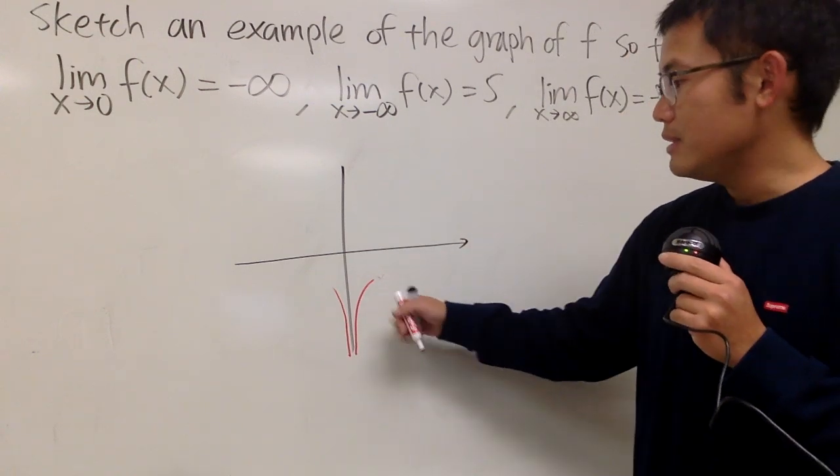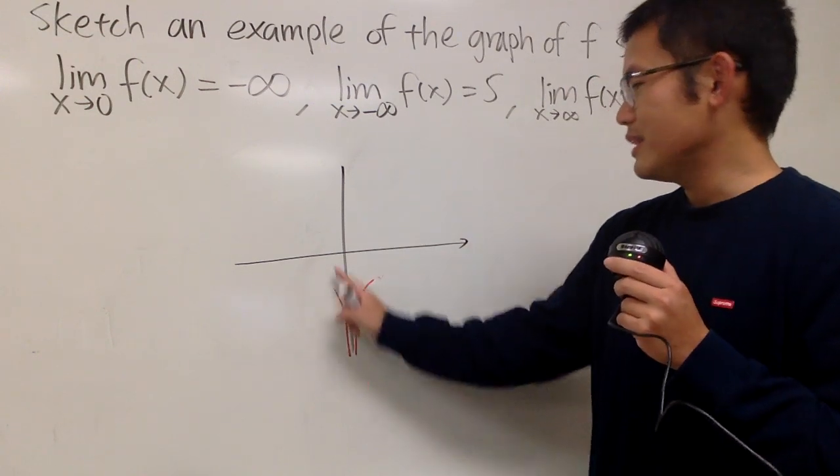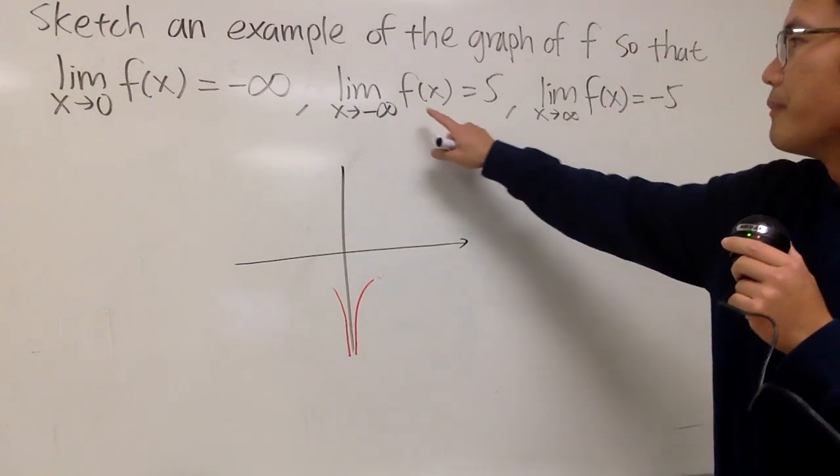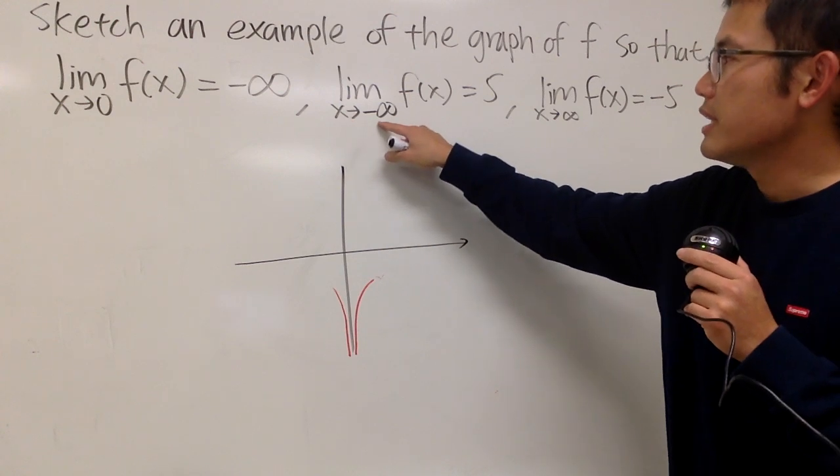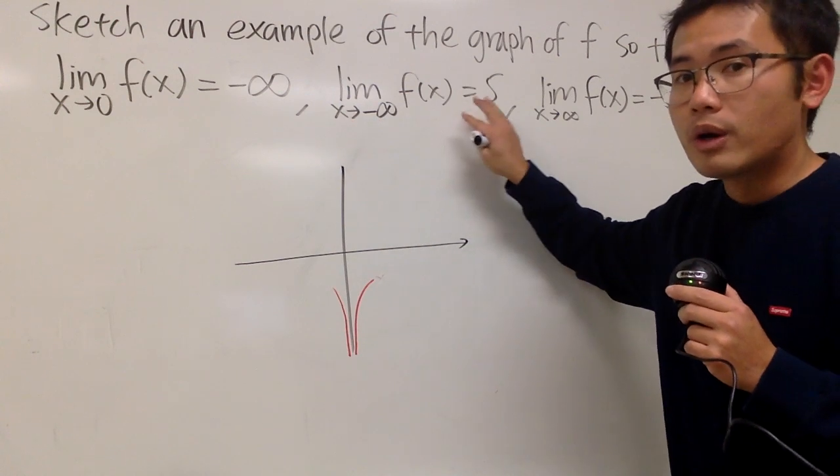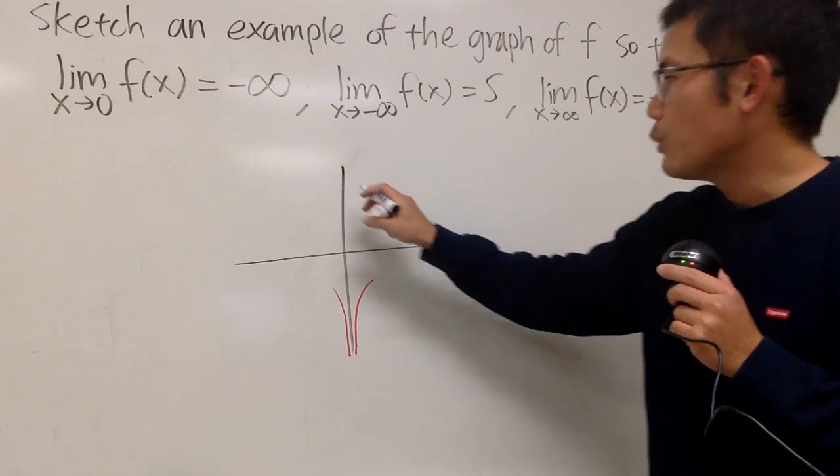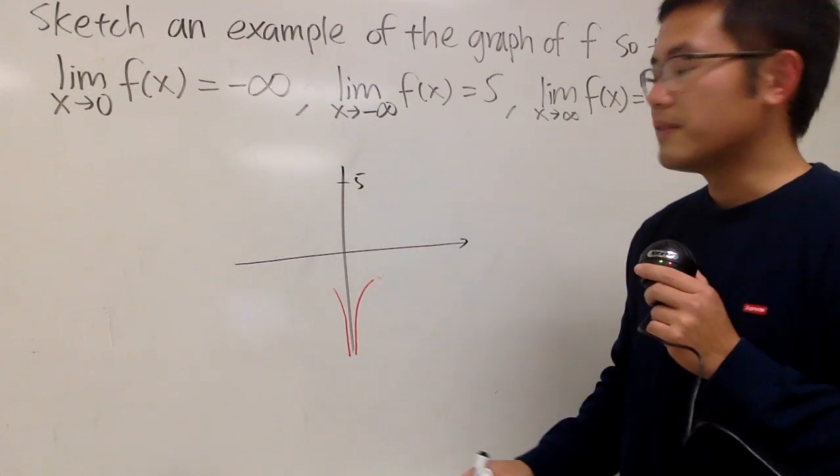So it must be this kind of situation. You can extend it, but that's up to you. Now, for the second piece of information, when x is approaching negative infinity, our limit equals 5. So I'll indicate that—let's say this right here is 5.